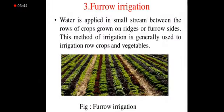Next is furrow irrigation. In this method, as we can see in the picture, one third of the layer is taken for irrigation and on both sides we have levees for water to flow. Water is applied in a small stream between the rows of crops grown on ridges of furrow sites. This method of irrigation is generally used for row crops and vegetables.